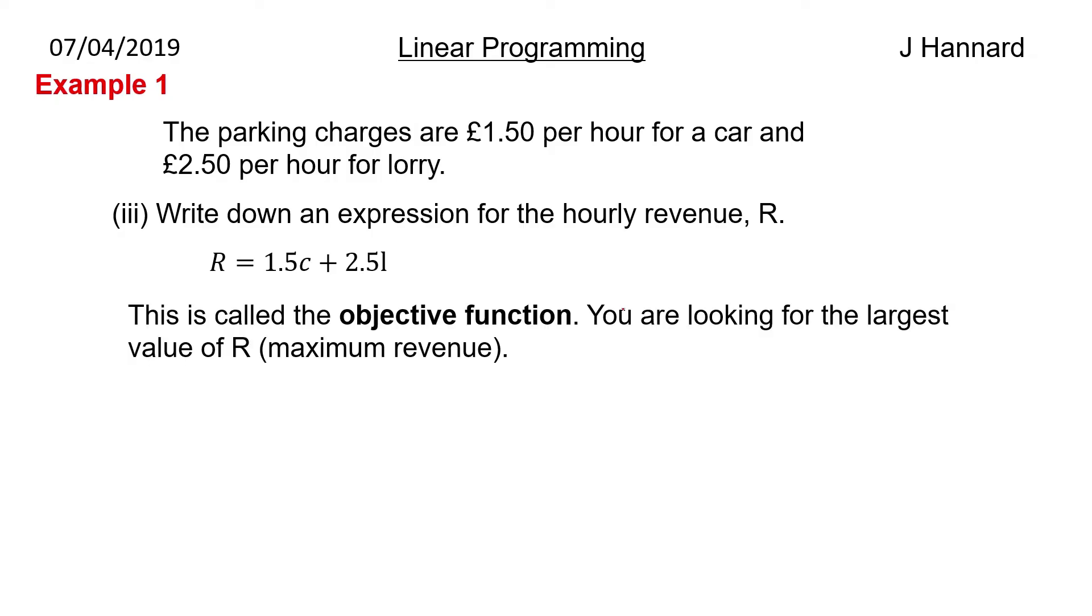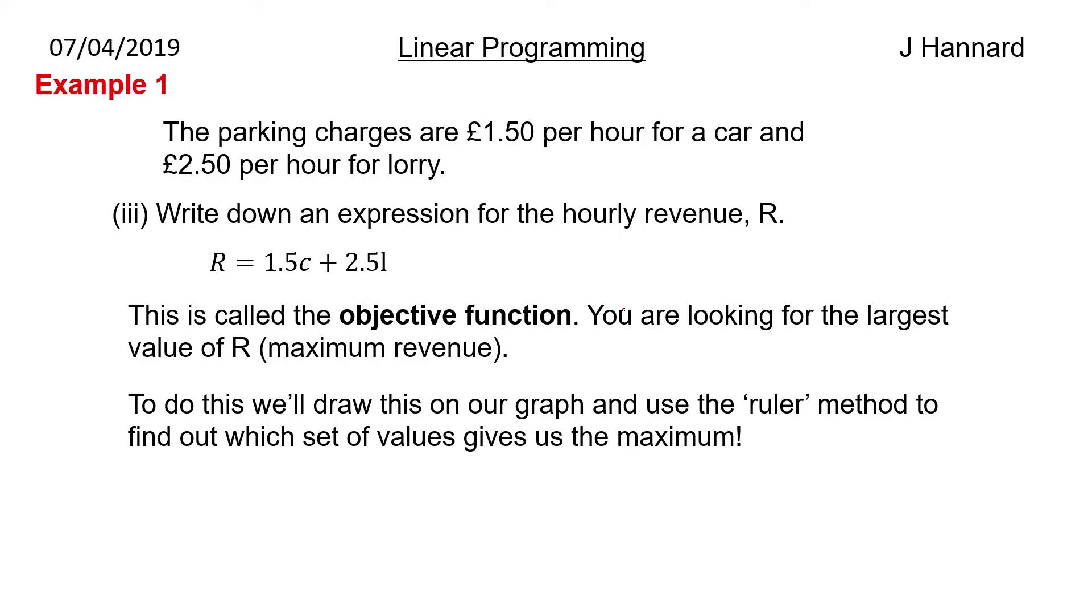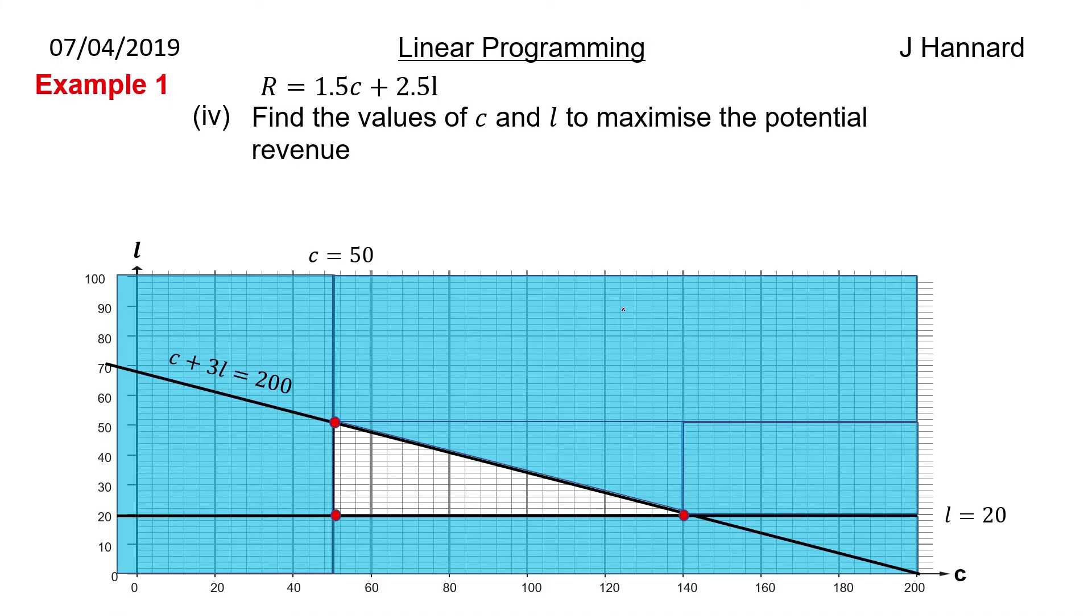So this is called the objective function. You're looking for the largest value of R. So these companies will do this sort of analysis on how many cars and lorries they're expecting to come in. If they have a full car park what is the optimum amount that they can have given the amount of space they have, given how many cars they must have, given how many lorry spaces they must have. And that is exactly what we're going to do. So what we do is we'll go onto our graph and then we'll use the ruler method. Something called the ruler method which I'll talk about in a minute to find out which set of values gives us the maximum.